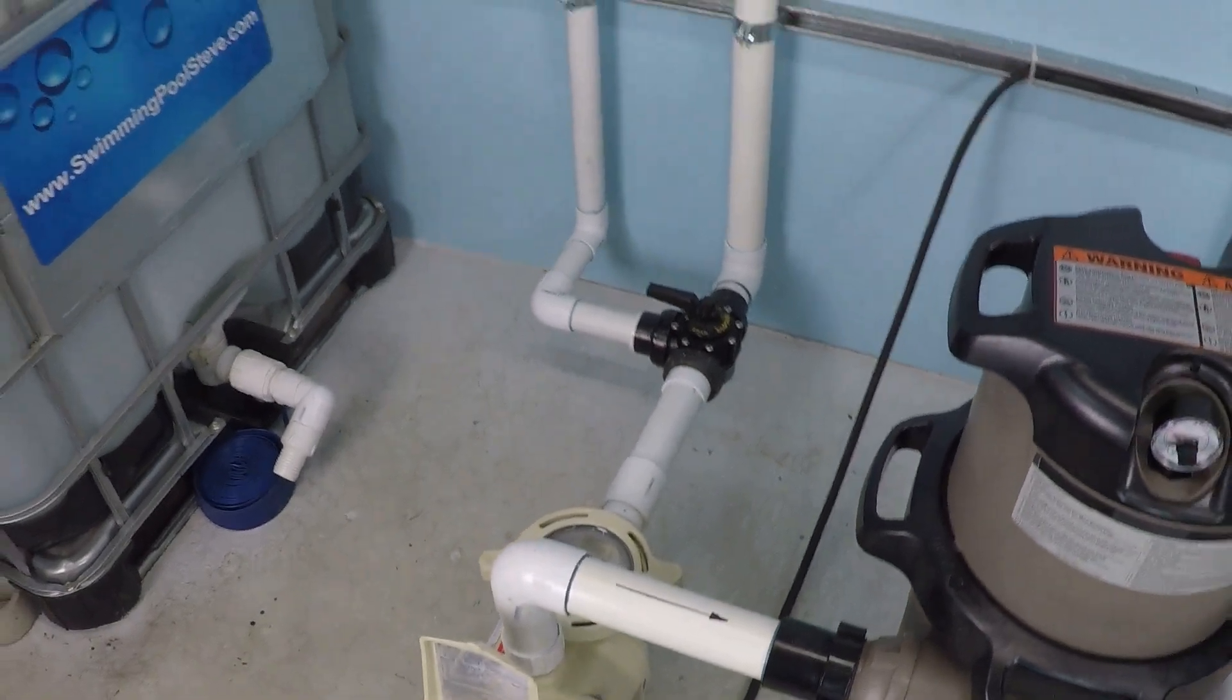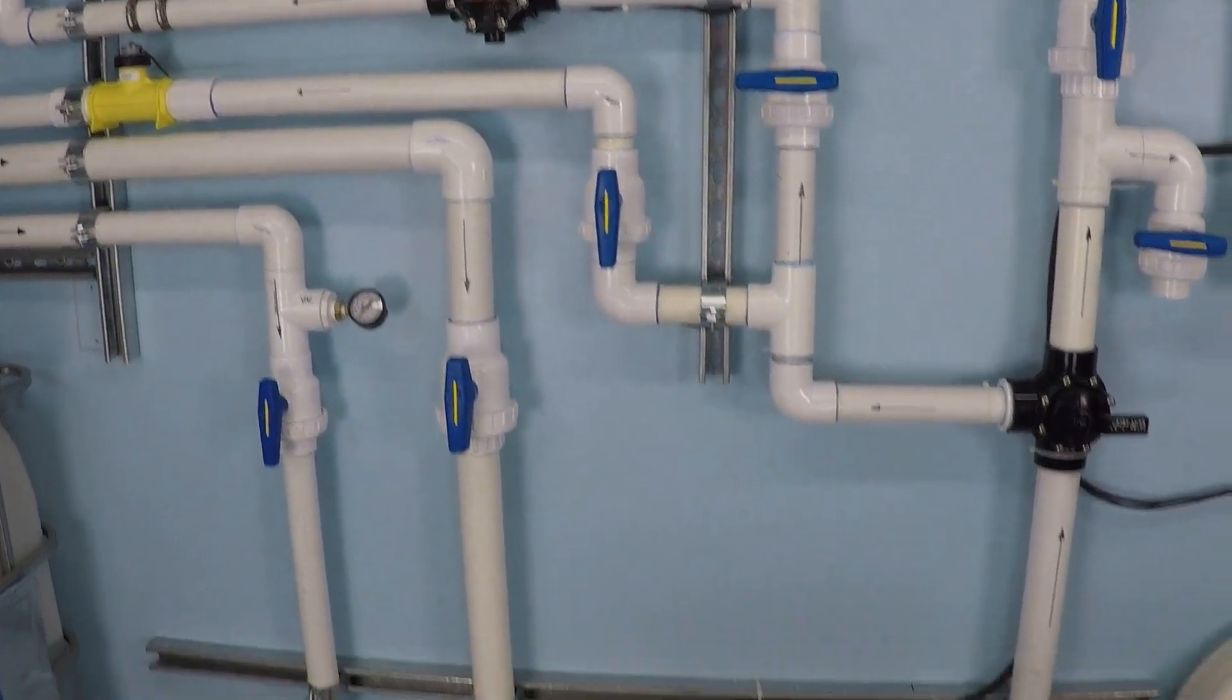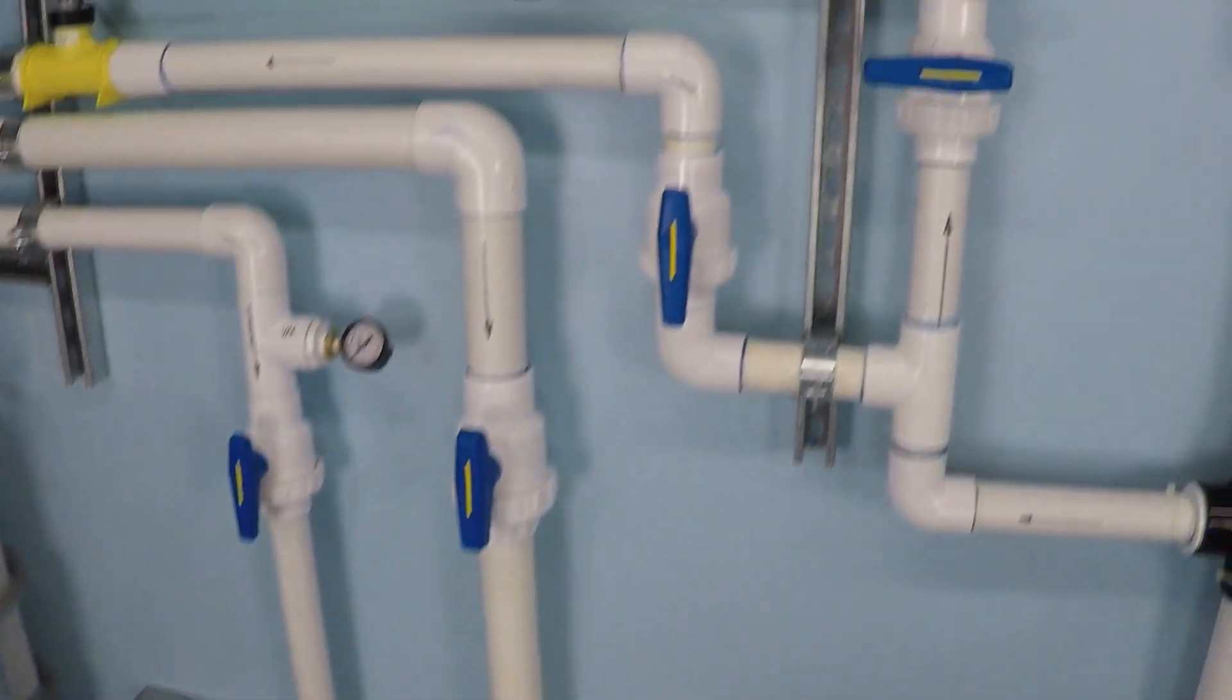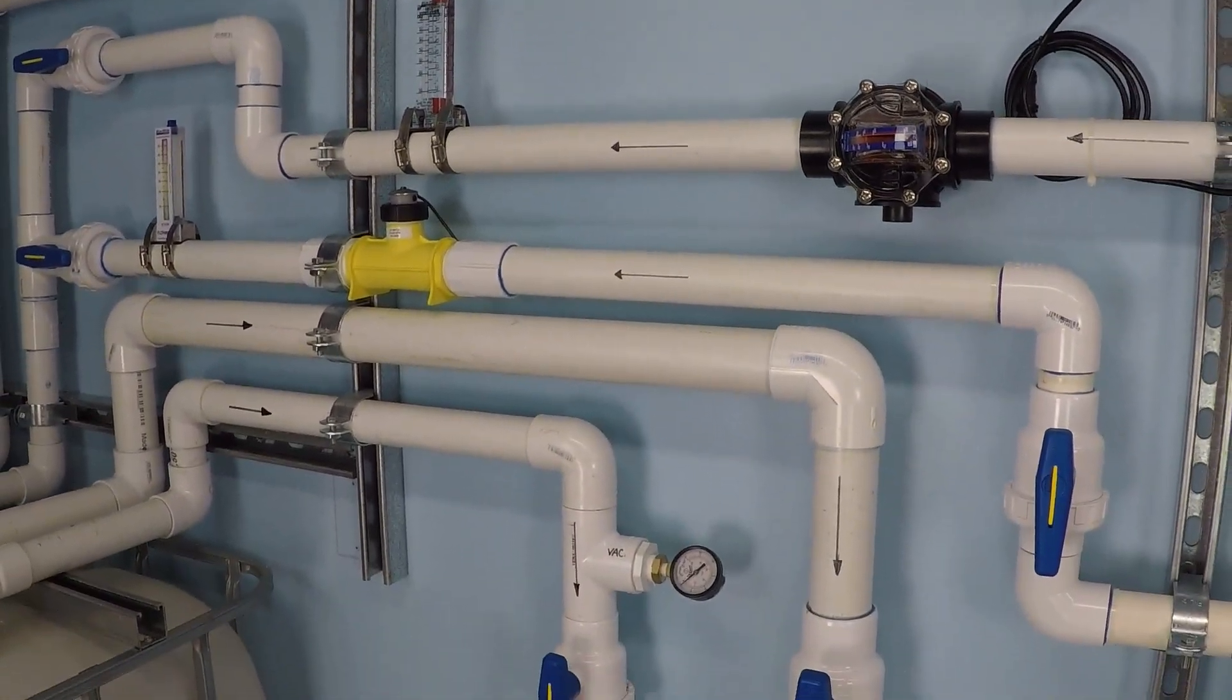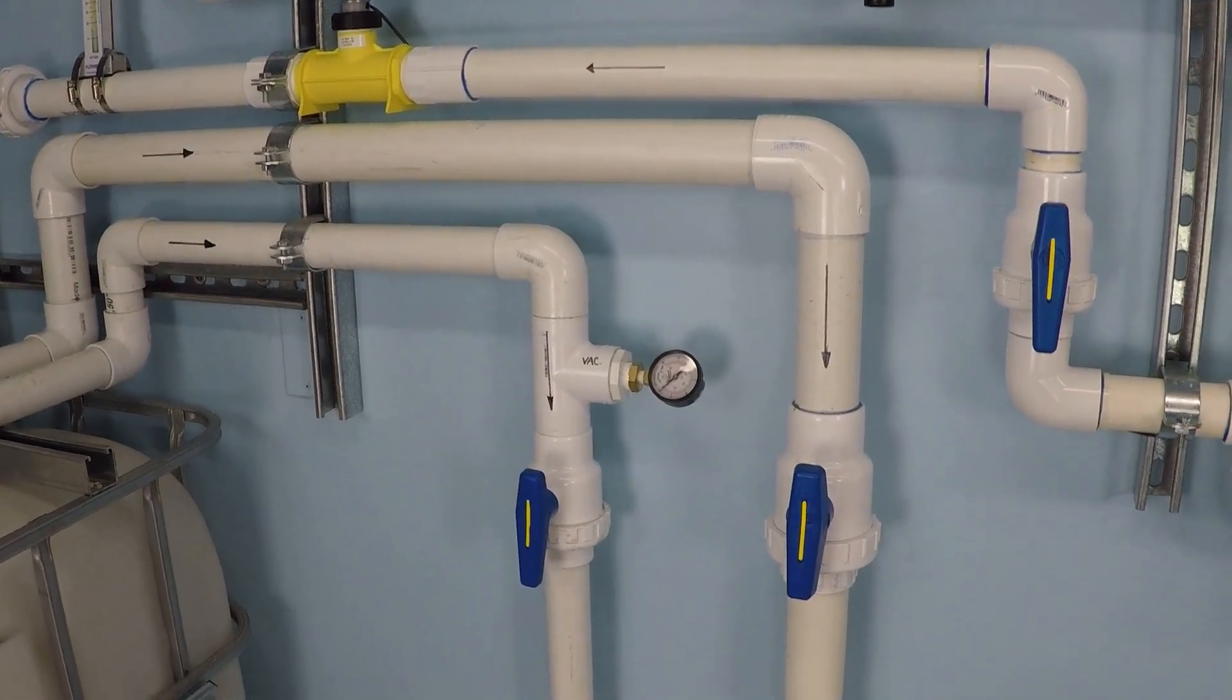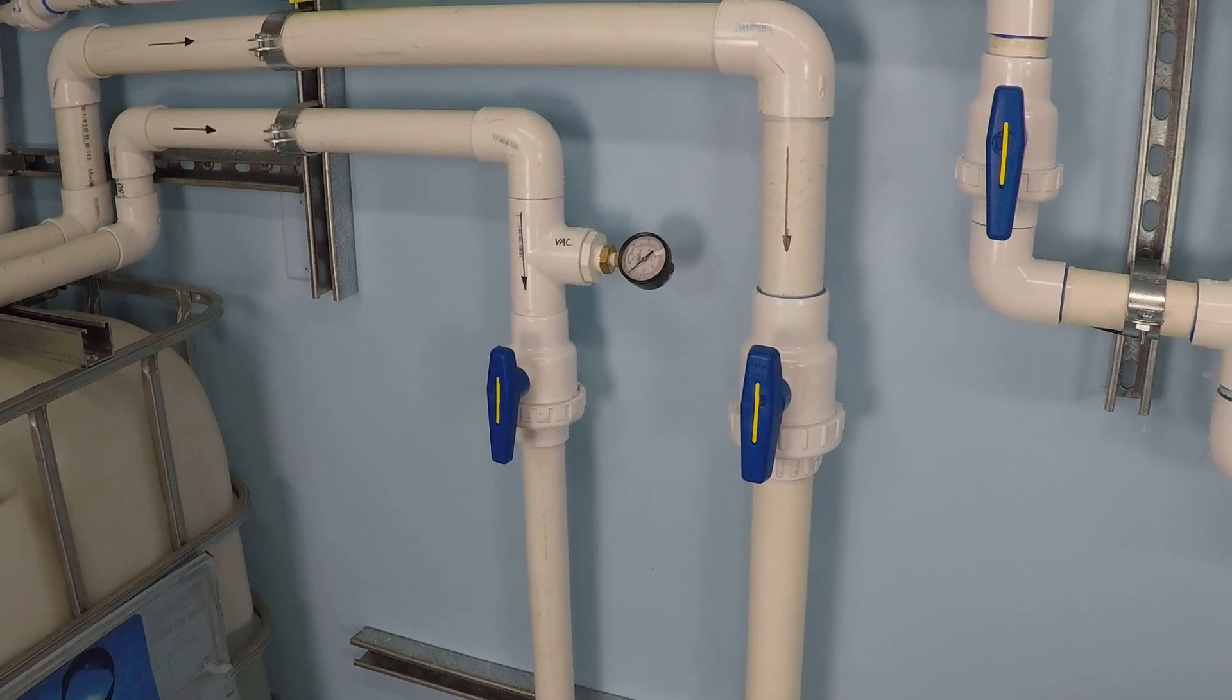And again, these numbers kind of represent somewhat of a more efficient pool system. It's got a cartridge filter, the filter's clean right now, dual suction lines, we're pushing through a two inch line. That is what would represent a better system these days versus inch and a half. If you only have inch and a half, it's a little bit more limiting and you probably wouldn't be seeing upwards of 110 gallons per minute.